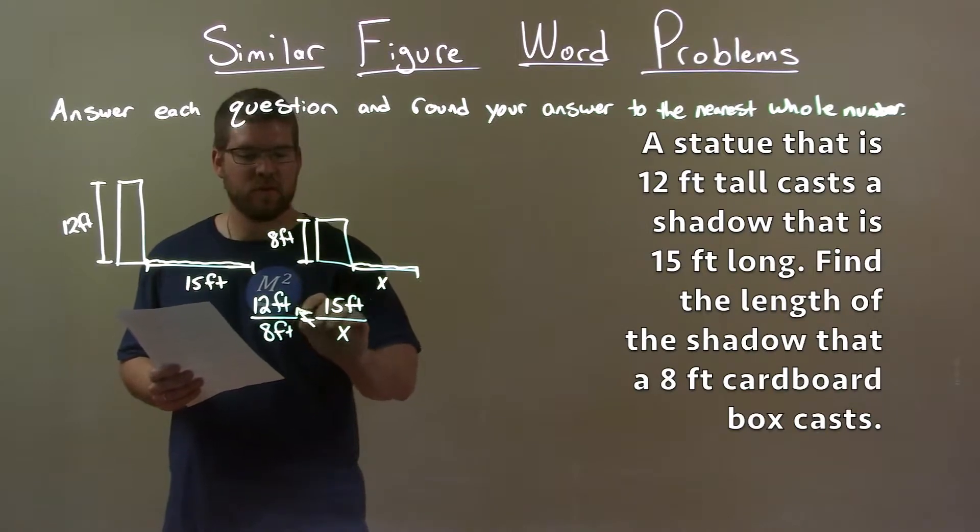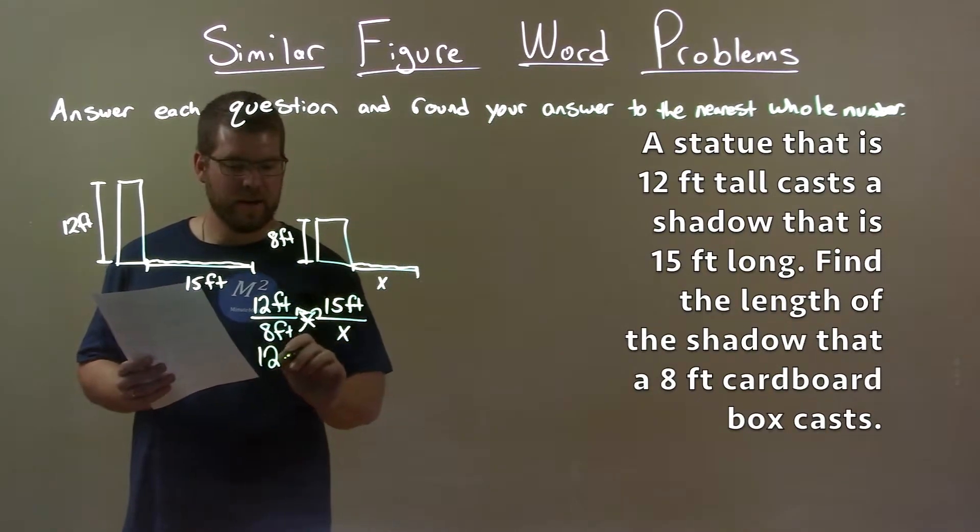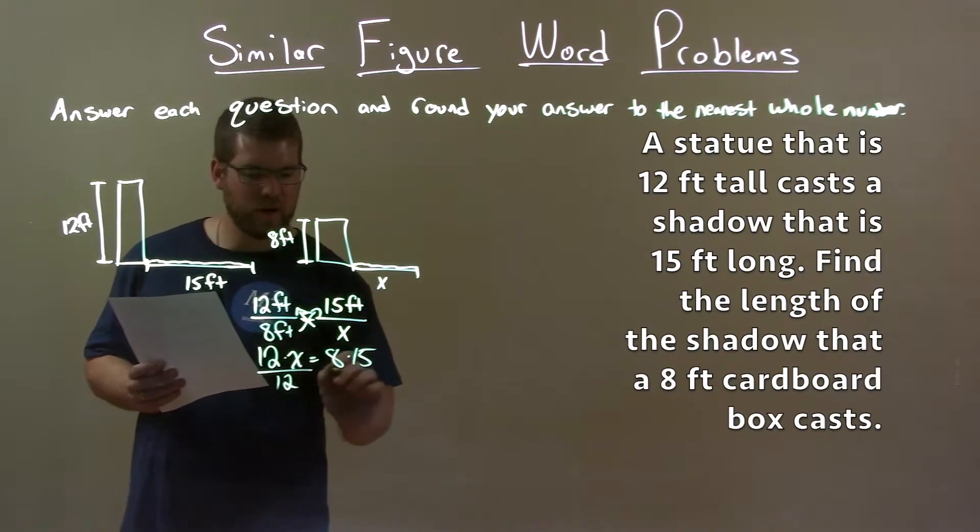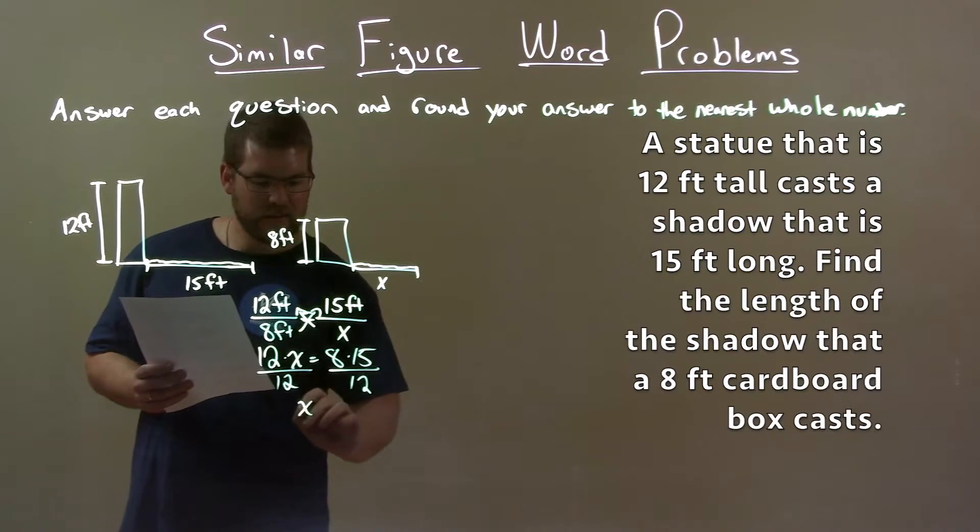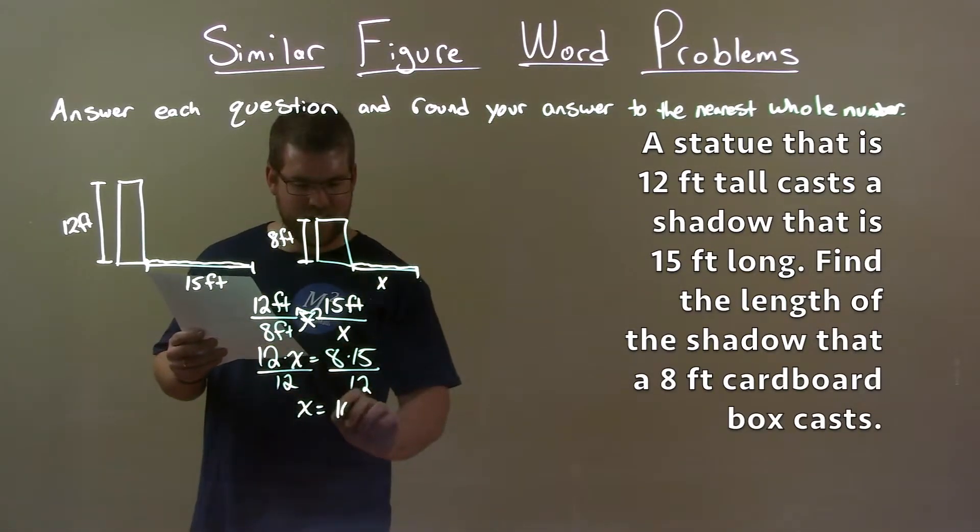Cross multiply. 12 times x equals 8 times 15. Divide both sides by 12, x is by itself, and that is 8 times 15 divided by 12 is 10 feet.